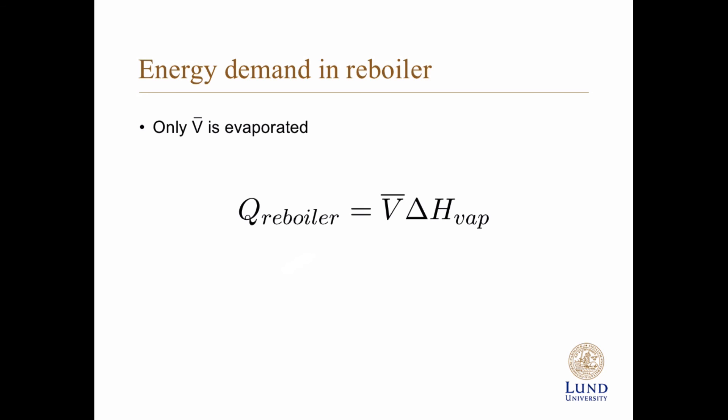Lastly, there was an extra question about the energy demand in the reboiler. And only V-bar is evaporated there. So you need to calculate V-bar by setting up mass balances. And then you multiply that with evaporation enthalpy.